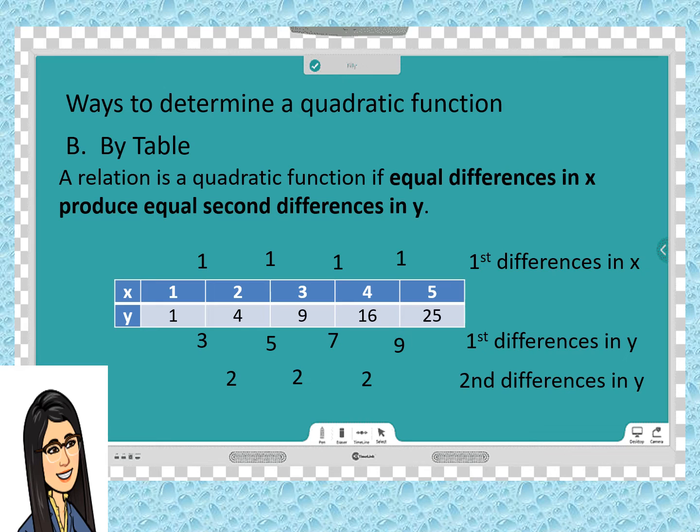If we have equal differences in x and equal second differences in y, then we conclude that this is a kind of quadratic function.